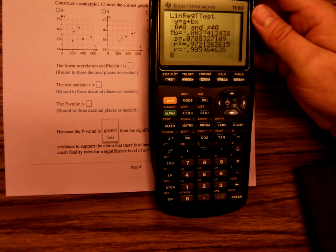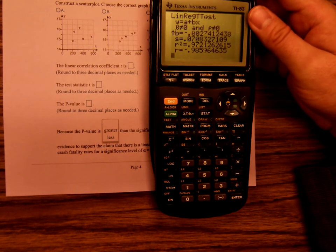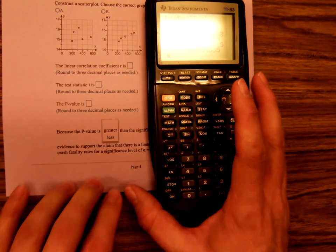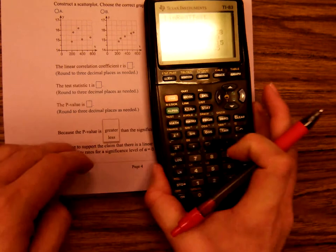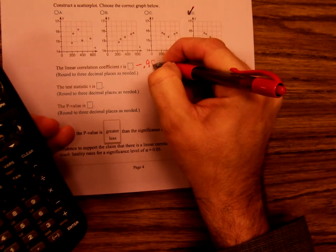Negative point nine eight six. Because it says round to three decimal places. So let me write that down. Negative point nine eight six.